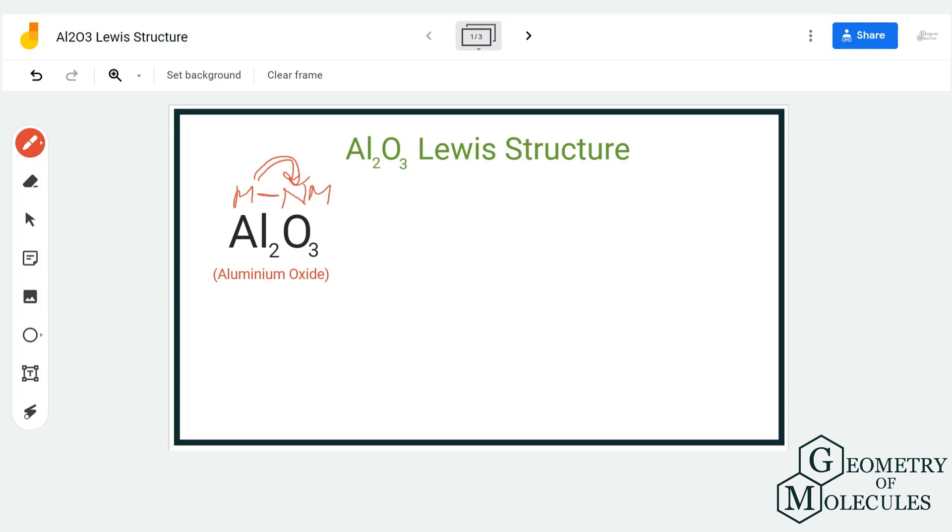So the Lewis structure would be a bit different from what you have seen previously. To start with it, I am going to place two Al atoms over here. Now Al is the chemical symbol for aluminum, and as we have two atoms over here, I am going to place two aluminum over here and three oxygen atoms over here.